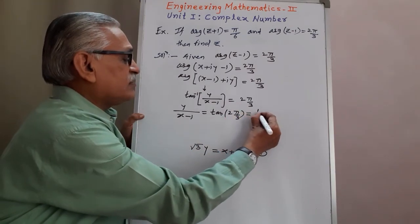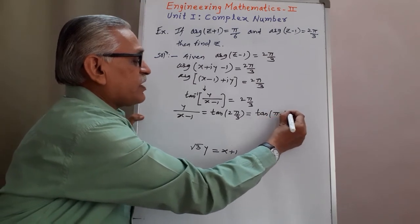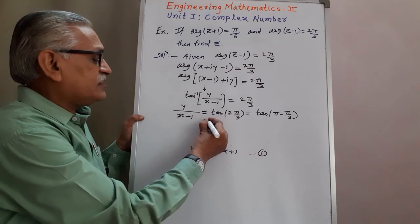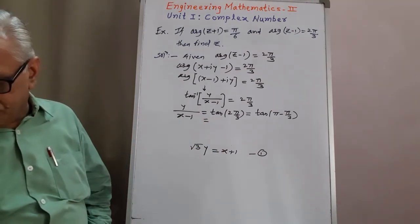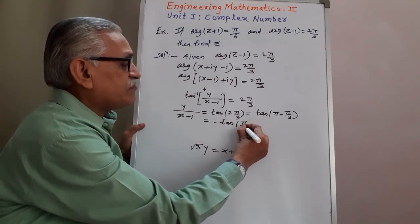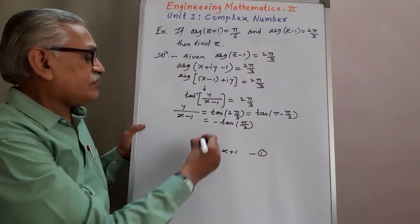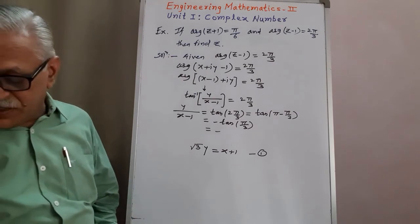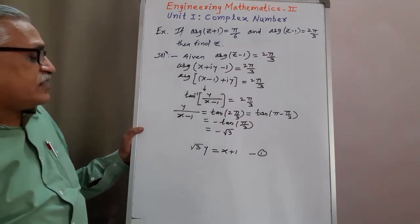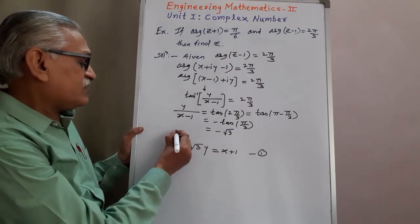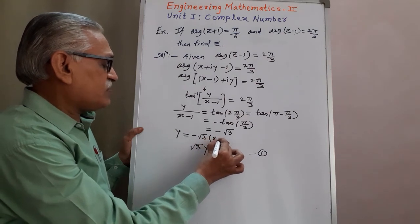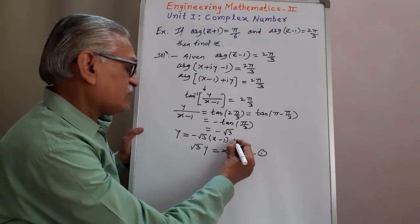Now, tan of 2 pi by 3 is nothing but tan of pi minus pi by 3. Using the identity tan(π − θ) = −tan θ, this equals minus tan of pi by 3, which is minus root 3. Cross multiplying, we get y equals minus root 3 into x minus one. We call this Equation 2.